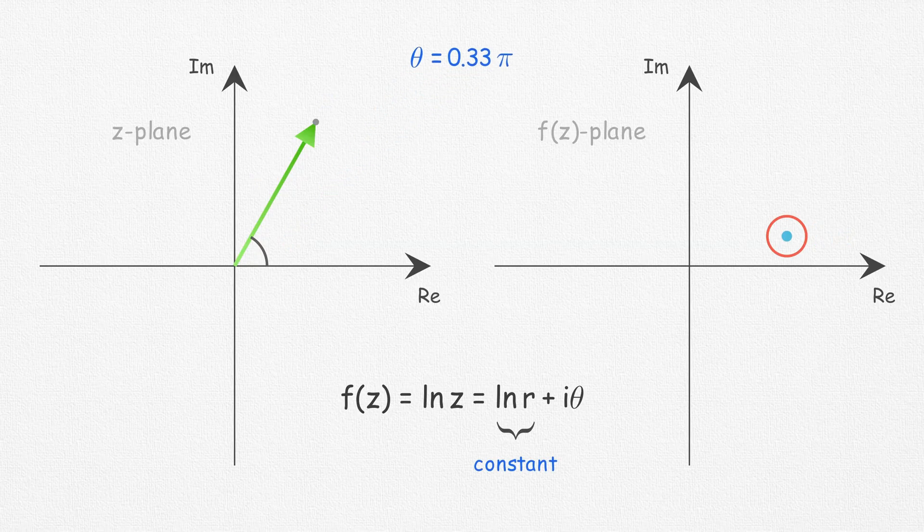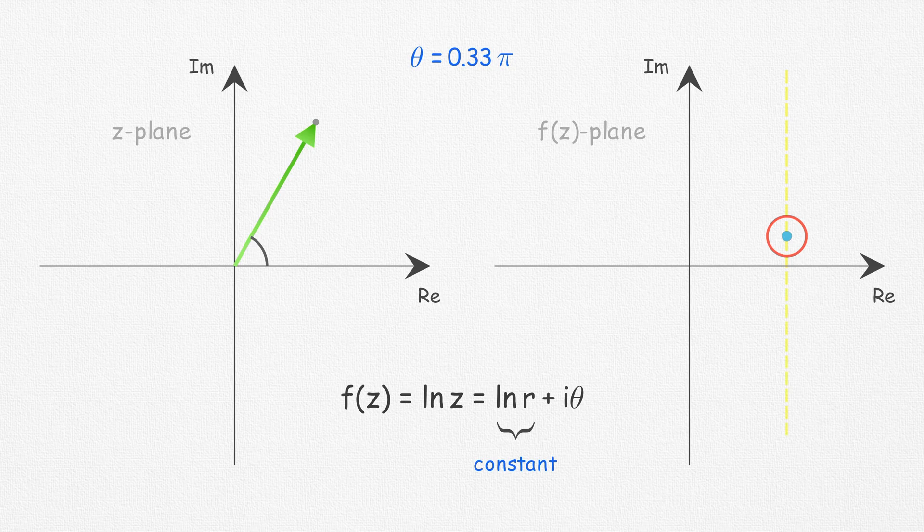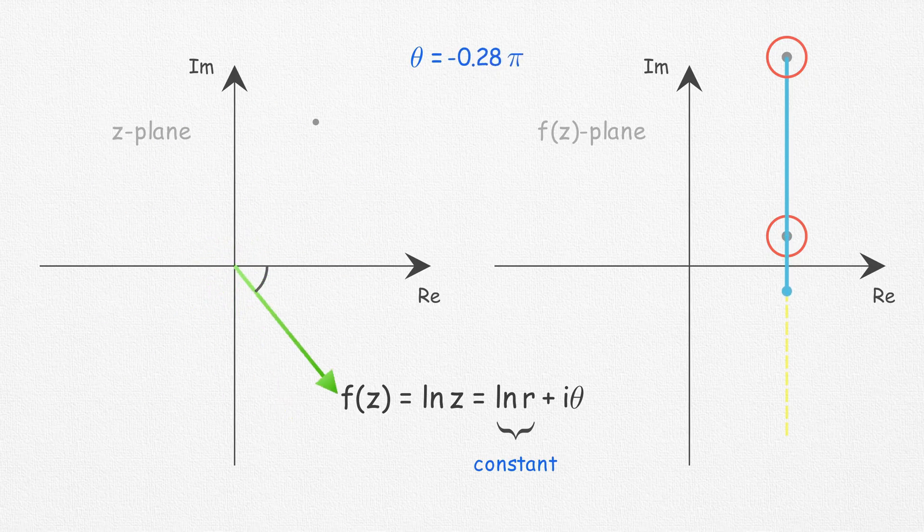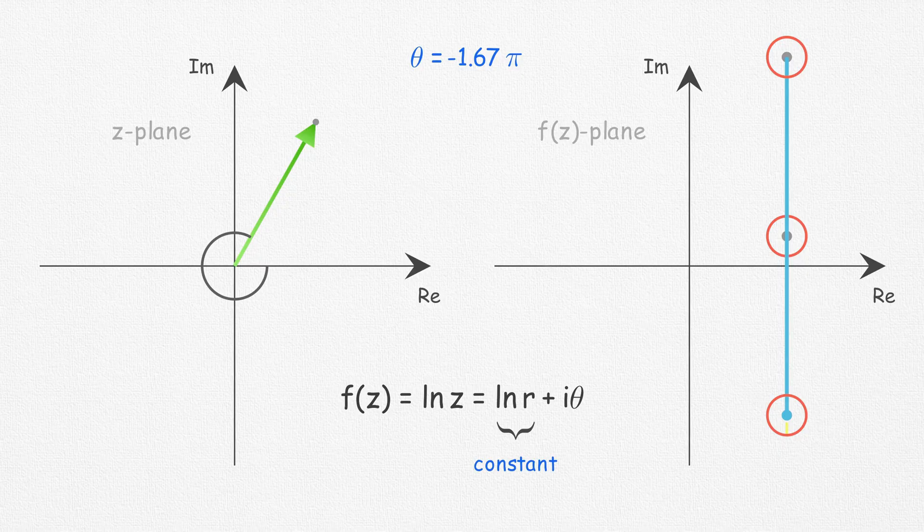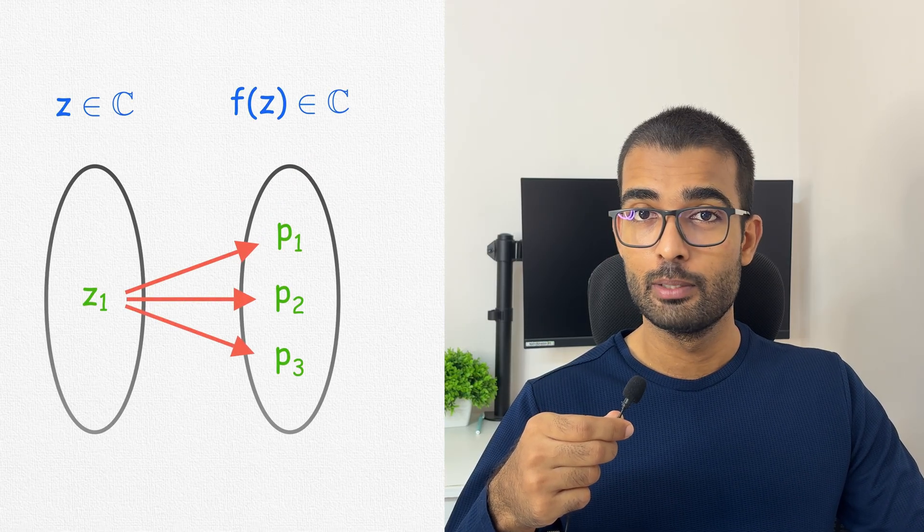As theta increases keeping r constant, we get the corresponding path in the f(z)-plane as a straight line. Now if we increase the value of theta by 2π, we see that in the z-plane we land at the same point, but in the f(z)-plane we reach a completely different point. Similarly, if we decrease the value of theta to minus 2π, we reach another different point. Therefore, corresponding to any single point in the z-plane, the function ln z maps to multiple number of points in the f(z)-plane, and this shows the complex functions can be multi-valued.